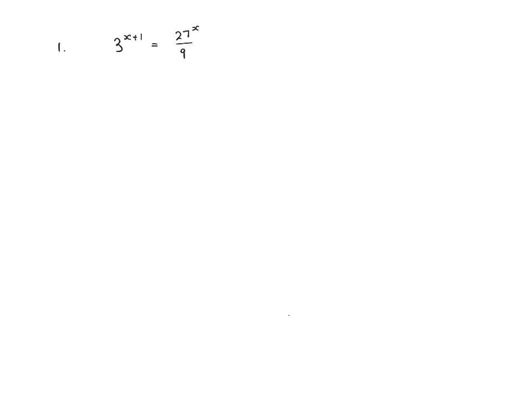For question 1, we have 3 to the power x plus 1 equals 27 to the power x over 9. All the base numbers are powers of 3, so we rewrite each as a power of 3. The equation becomes 3 to the power of x plus 1, and 27 is 3 cubed, so we have 3 cubed to the power x over 3 squared, giving 3 to the power x plus 1.